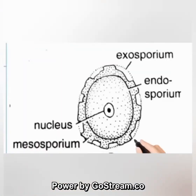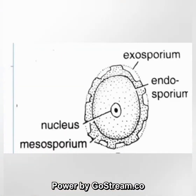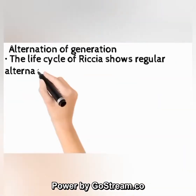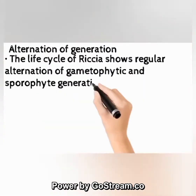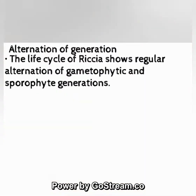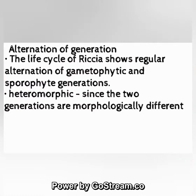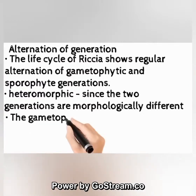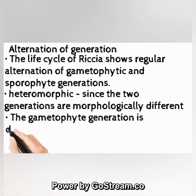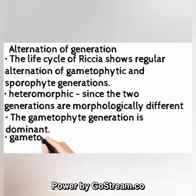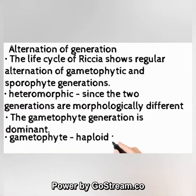A diagram of the spore is also given. Alternation of generation: the life cycle of Riccia shows a regular alternation of gametophytic and sporophytic generations — heteromorphic, since the two generations are morphologically different. The gametophytic generation is dominant. Gametophyte is haploid; sporophyte is diploid.